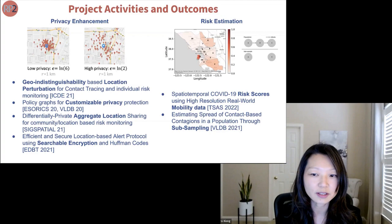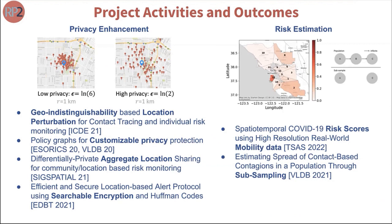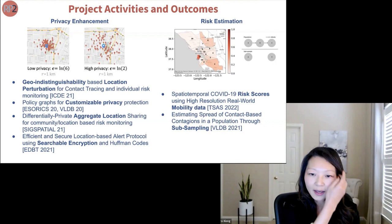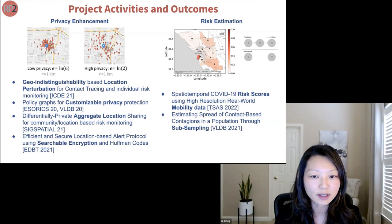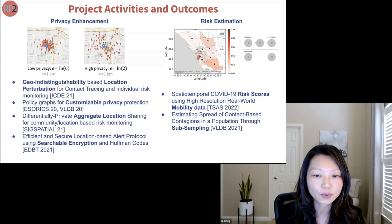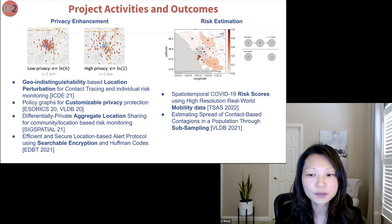Our efforts have focused mainly on privacy enhancement techniques supporting contact tracing and risk estimation. For privacy enhancement, we developed location perturbation techniques based on geo-indistinguishability — a location privacy notion that extends differential privacy. The illustration shows samples of perturbed locations using a true location that satisfies geo-indistinguishability; a higher privacy level corresponds to higher perturbation. Given perturbed locations, our main finding is that with probabilistic modeling it is still feasible to identify contacts with reasonable precision and recall. We also studied customizable privacy policies and differential privacy for aggregated mobility data.